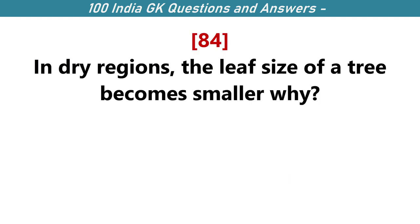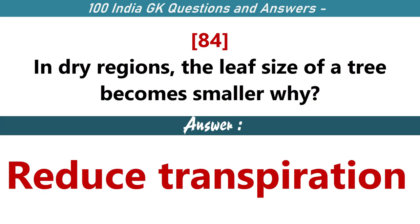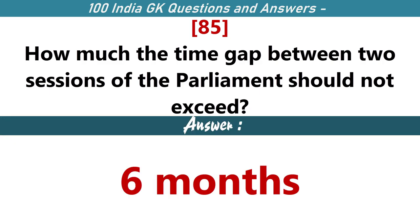In dry regions, the leaf size of a tree becomes smaller. Why? To reduce transpiration. How much time gap between two sessions of Parliament should not exceed? Six months.